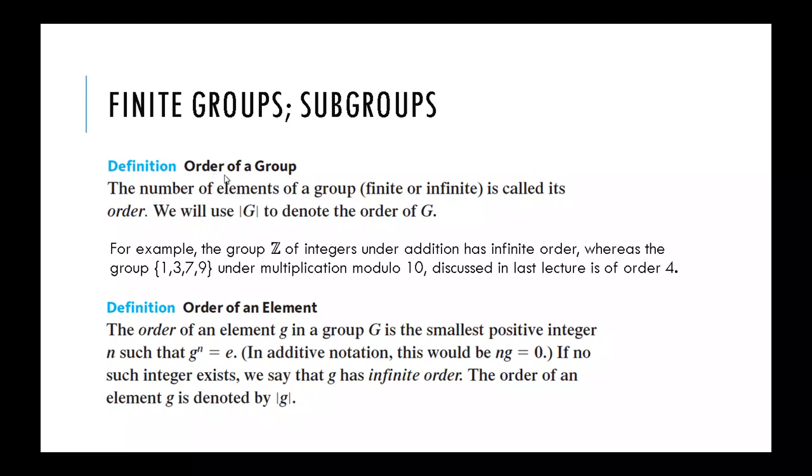The definition says that the number of elements of a group, which may be finite or infinite, is called its order. We will use the cardinality notation to denote the order of G. If the group is finite, it will have a finite number of elements. If the group has infinite elements, then the order of the group will be infinite order.